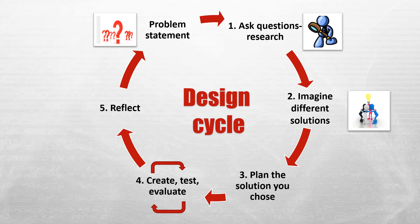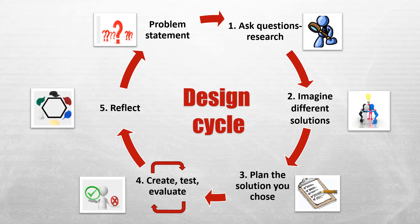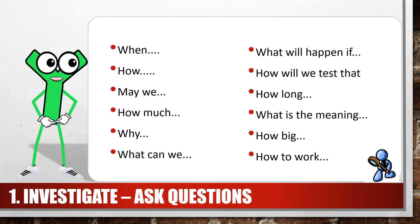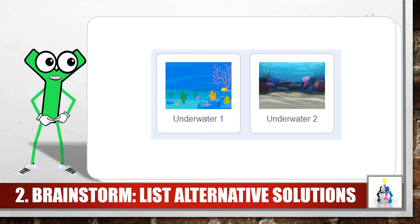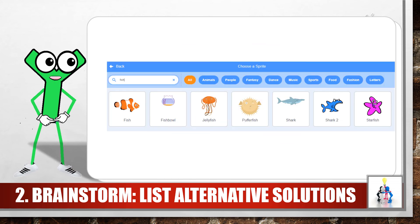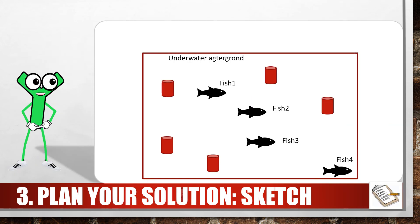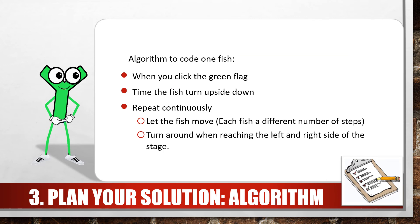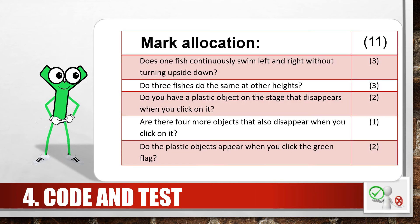Use the design cycle again. Write down any questions you have about this exercise in your workbook. Then list two possible backdrops you can consider. Also write down the names of four possible sprites you can consider. Draw the design for the background and the position of the sprites and label the sprites in your workbook. Complete the algorithms for the fish sprites and the plastic objects, or write your own algorithms. Then write your program and use the rubric to check that your program meets all the criteria.